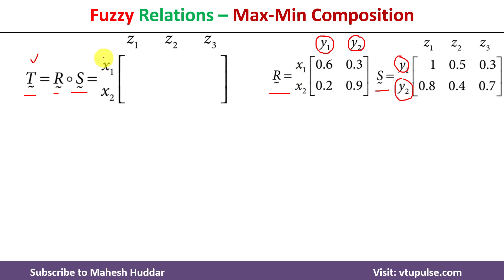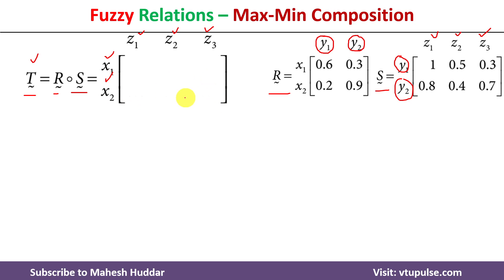The number of members in fuzzy relation T equals the number of rows in the first relation (x1, x2) times the number of columns in the second relation (z1, z2, z3). So there will be six members in T. We need to calculate membership values for all six: x1z1, x1z2, x1z3, x2z1, and so on.